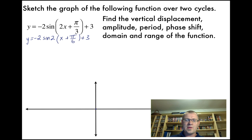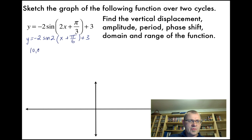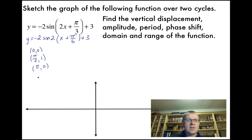We start with the main points of a sine graph. Sine starts at (0, 0), goes up to a maximum of 1 at π/2, back to 0 at π, down to −1 at 3π/2, and returns to 0 at 2π.